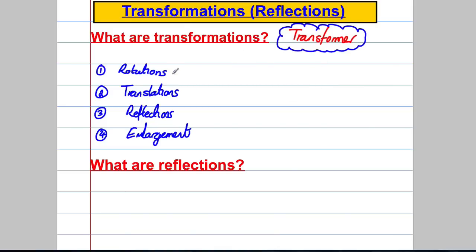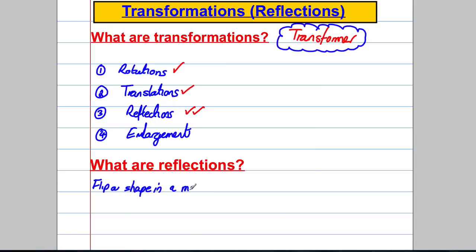And there are four types: rotations — we've done videos on that; translations — we've done videos on that; in this video we're going to do reflections; and lastly there are enlargements. Now what are reflections? Reflections are basically when you flip a shape in a mirror line.